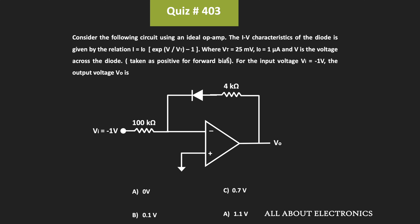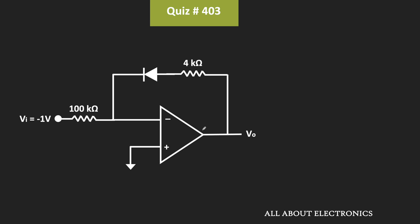In this expression, Vt is the thermal voltage and here that is equal to 25mV. Moreover, I0 is equal to 1μA, and the voltage V is the voltage across the diode in the forward bias condition. In this circuit, we have been asked to find the output voltage Vout when the input voltage is equal to –1V.